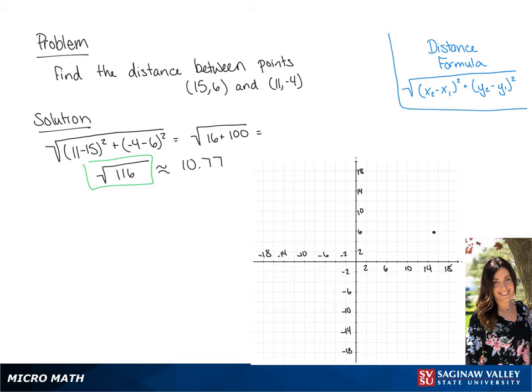Now we're going to graph our line. We are using the two points to plot it, and the distance between these two points is the square root of 116.